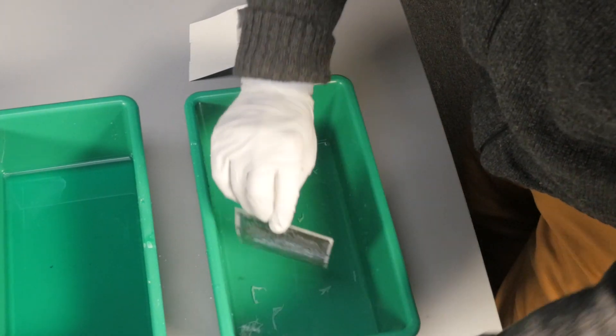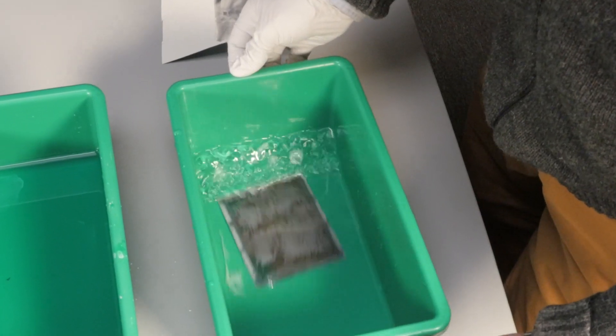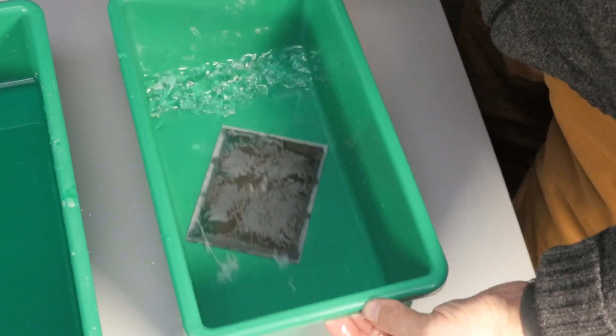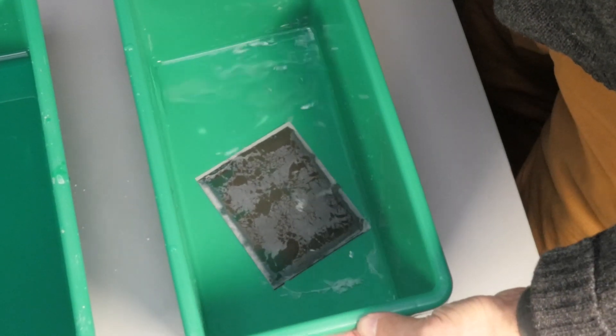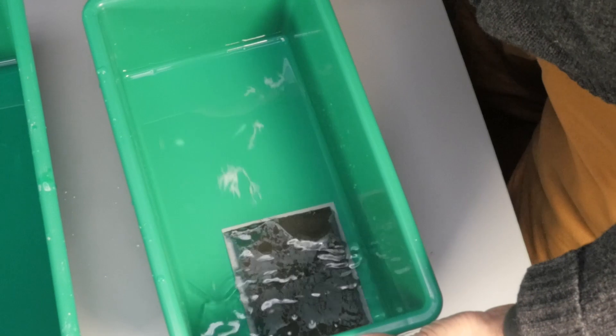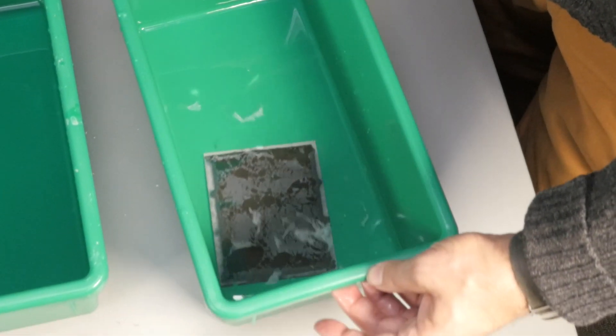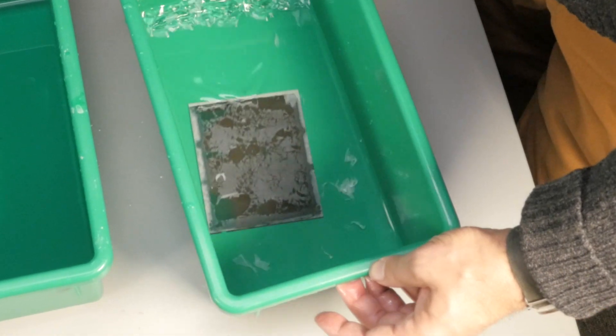Then I can place the negative back into the fixer face up when the residual reagent goo can float off. Total fixing time 2 or 3 minutes, 5 if necessary to get all the goo off.